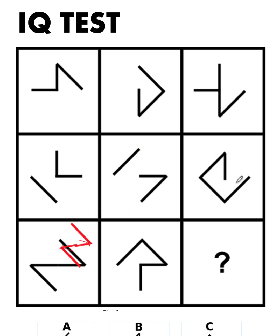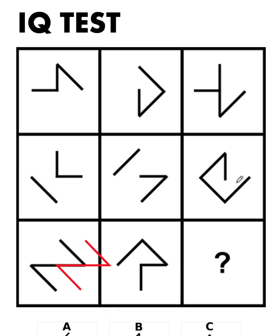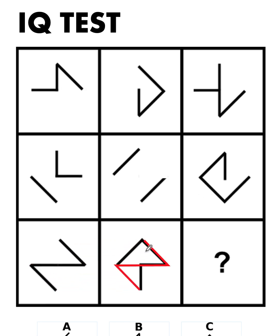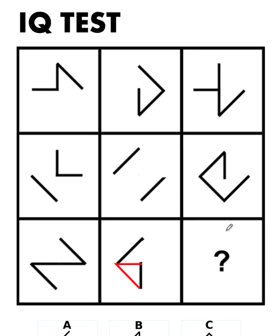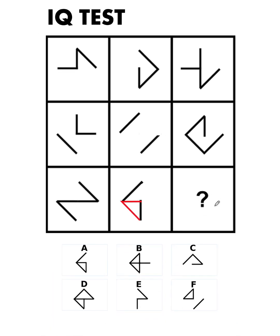Now implement the same rule for the third row. Overlap the two pictures — there are two overlaps here. Erase this part and erase this part, and this is what should be in the third picture. That is clearly letter A. So the answer is letter A.